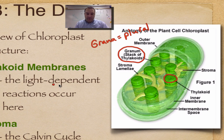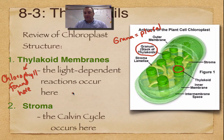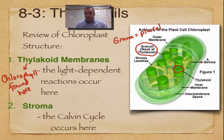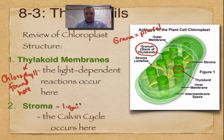The light-dependent reactions occur in the thylakoid membranes because the light-dependent reactions have to have chlorophyll helping them — so that one's going to be really easy to remember. Now the second part is the stroma, and this is the liquid outside the thylakoids.